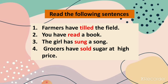Let us see some examples. Farmers have tiled the field — here 'farmers' is plural, so we use 'have': farmers have, verb third form, tiled the field. You have read a book. The girl has sung a song. Grocers have sold sugar at high price. This is how we write affirmative sentences in present perfect tense.